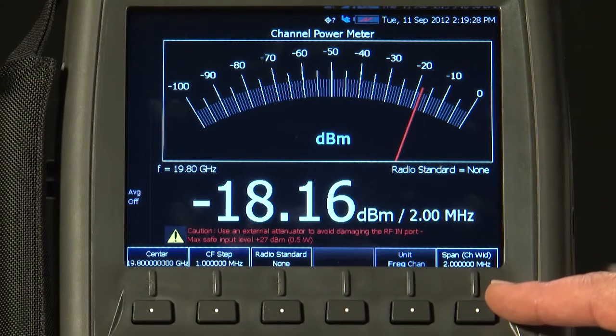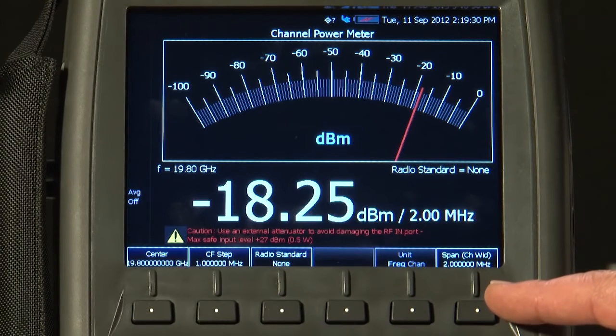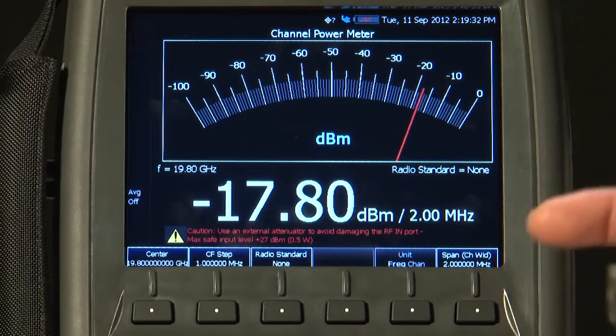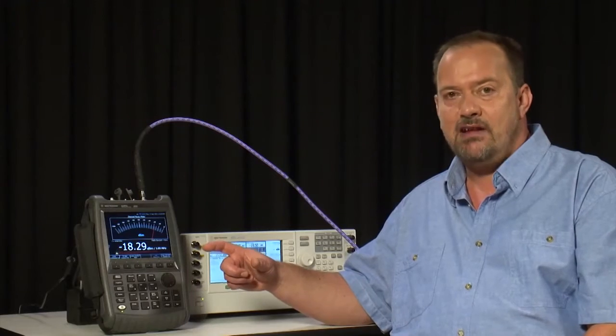And on the right here, we have set the span or channel width to 2 MHz. So that is the bandwidth within which we are measuring the RF power.